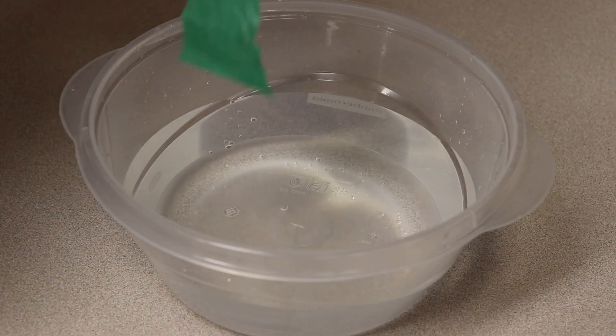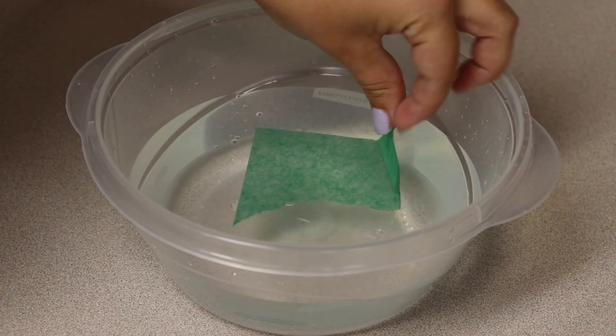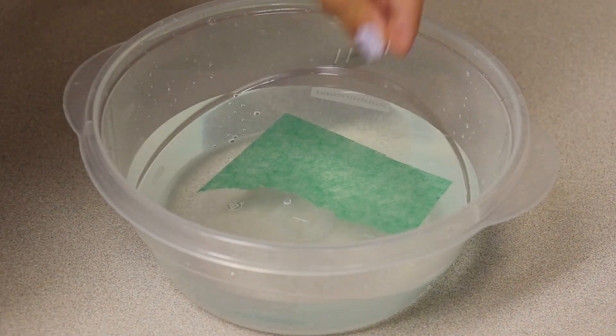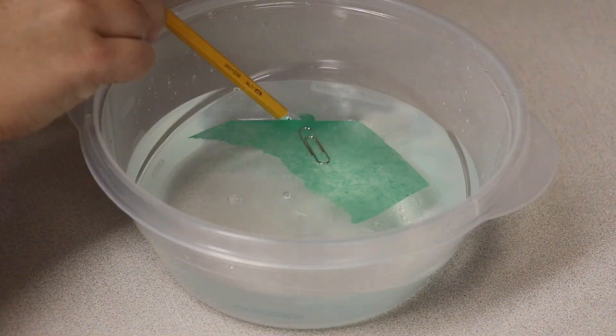Tear off a small square of tissue paper and gently place it on the surface of the water. Now you will place your paper clip on top of the tissue paper.